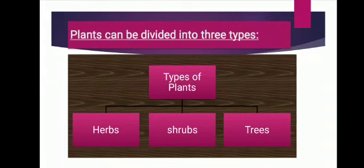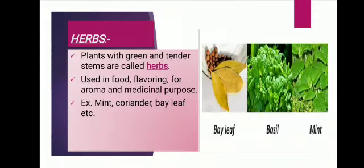First, about herbs. Plants with green and tender stems are called herbs. They do not contain woody stems. Herbs are small plants having soft and delicate stems — the stem of herbs is juicy and fleshy. They are short-sized plants and do not grow more than one meter in height, like basil, tulsi, mint, bay leaf and coriander.